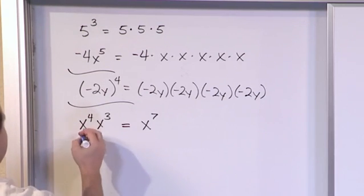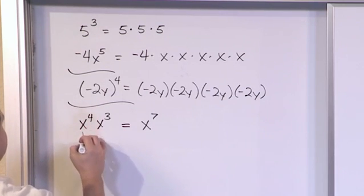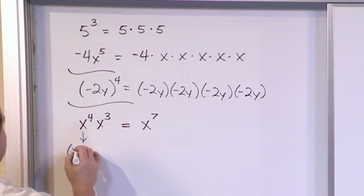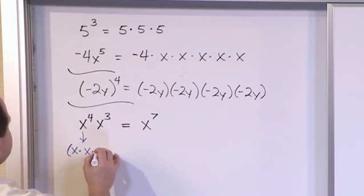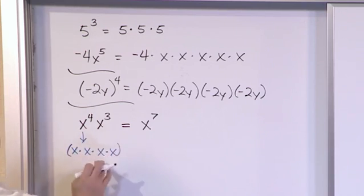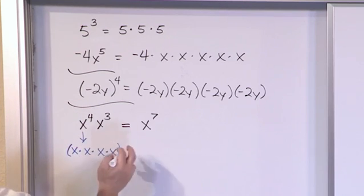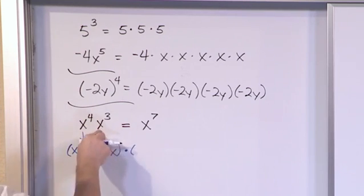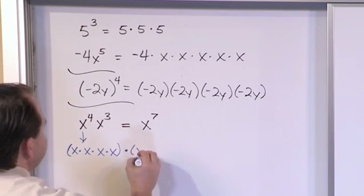Because what you really have here — x to the power of 4 — is basically x times x times x times x, multiplied by x to the third power, which is x...